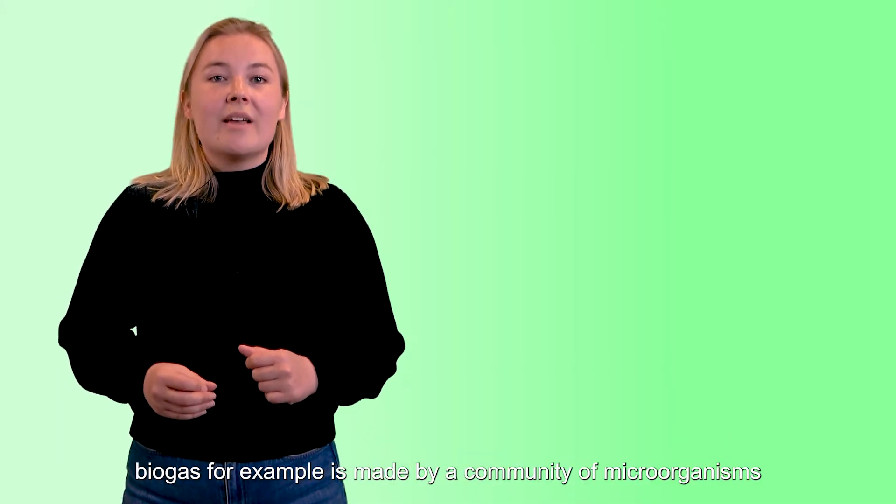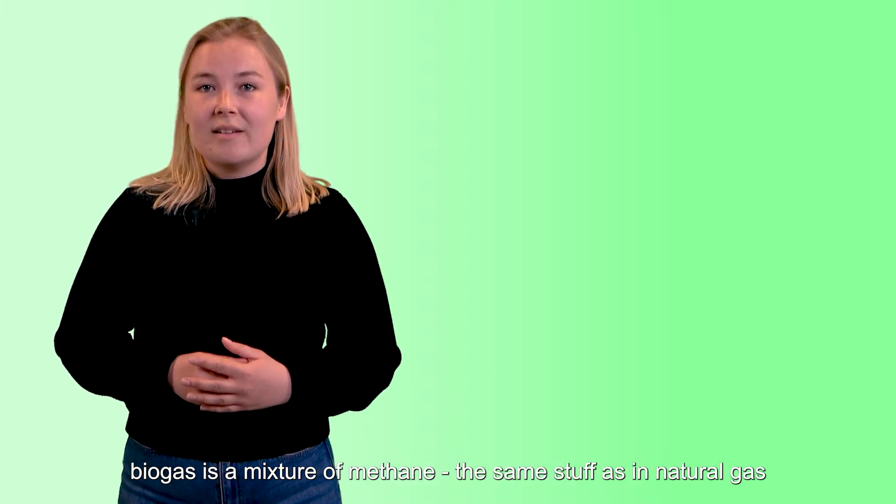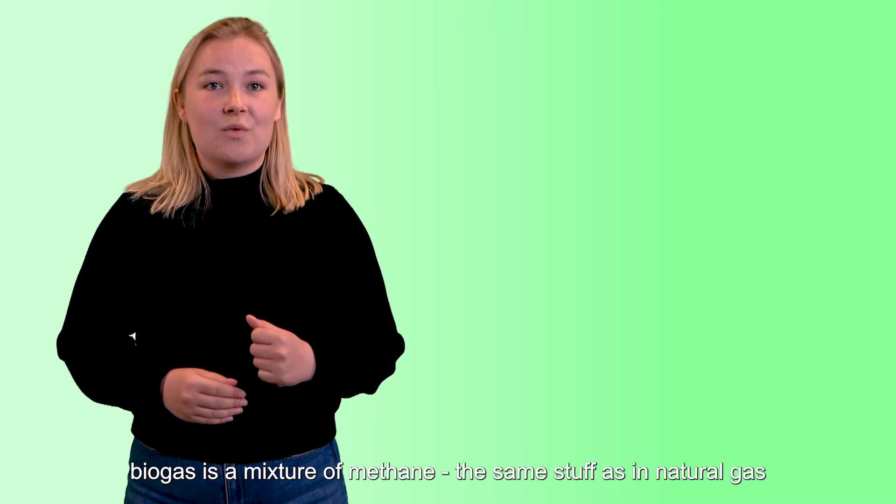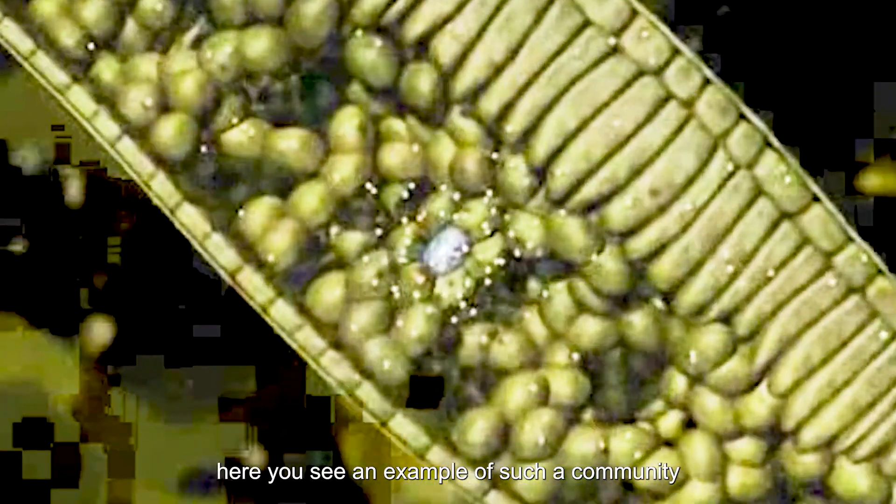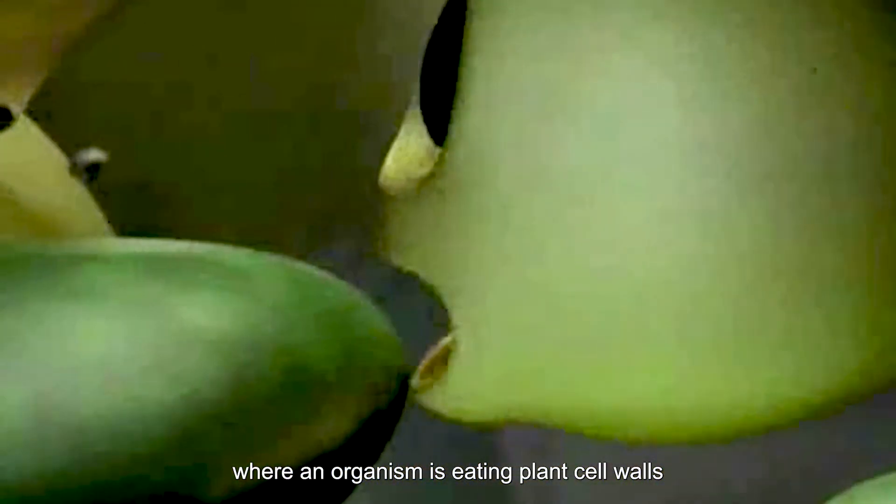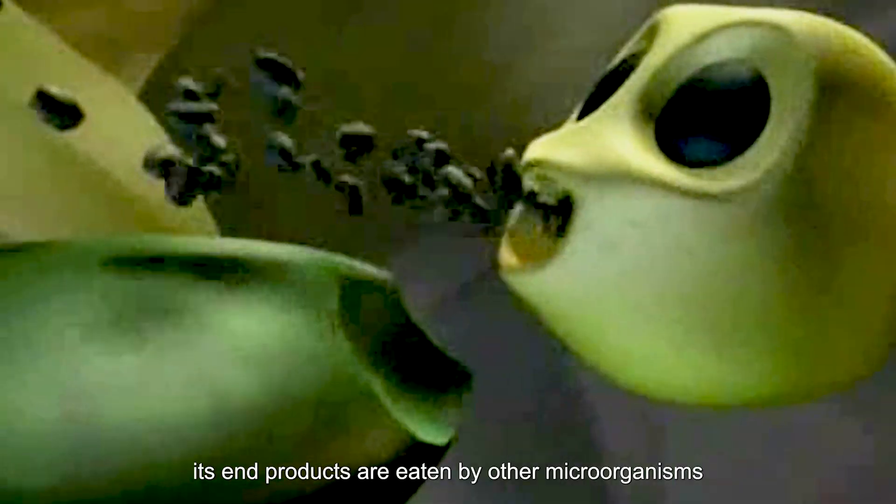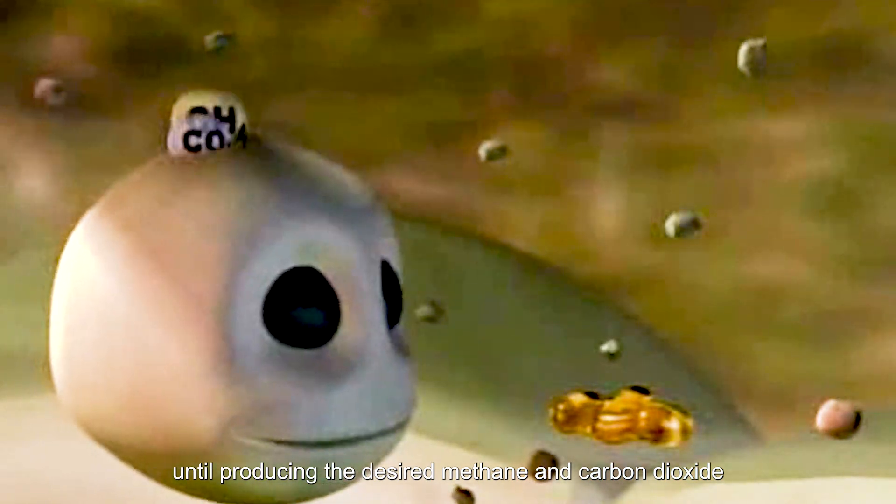Biogas, for example, is made by a community of microorganisms. Biogas is a mixture of methane, the same stuff as in natural gas, and carbon dioxide. Here you see an example of such a community, where an organism is eating plant cell walls. Its end products are eaten by other microorganisms, until producing the desired methane and carbon dioxide.